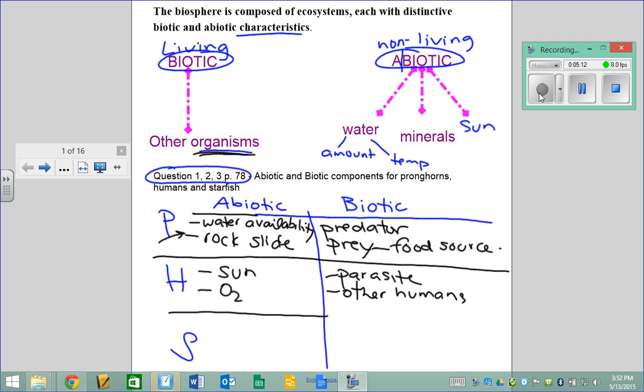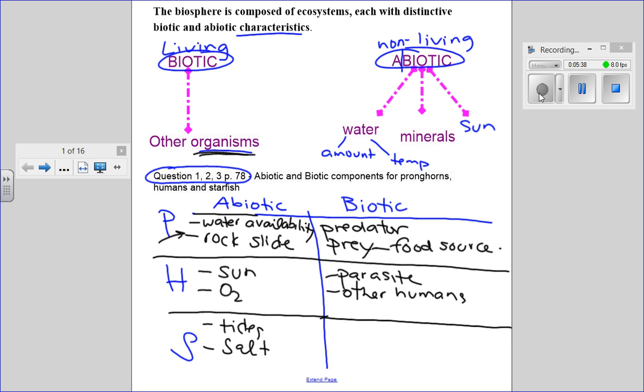For the starfish, abiotic factors could be tides. They live in water, so the movement of the ocean changes at different times of year and day, affecting their movement. We could say salt content, because that affects water density and whether things can float. In the biotic section, maybe bacteria or something that could give it an infection or disease—another organism. It doesn't have to be eating it or being eaten. We could also put humans. Humans could go realistically anywhere—we build houses all over—but the idea is I've put some other organism that exists in its ecosystem.